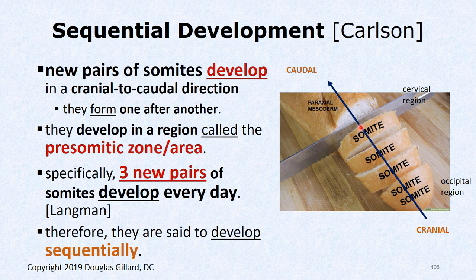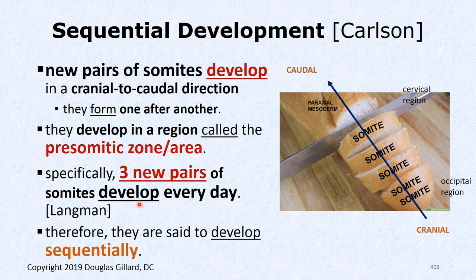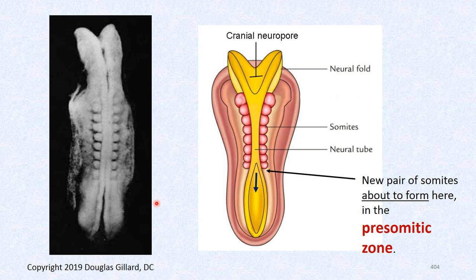Somites form sequentially — unlike brain segmentation which can occur all at once, these form like slicing bread: you make one, then another, then another. The loaf of bread is the paraxial mesoderm, and we're slicing it into somites. This is occurring bilaterally — there's a pair on each side of the midline. The zone about to form the next somite is called the presomitic zone. About three new pairs of somites form every 24 hours.